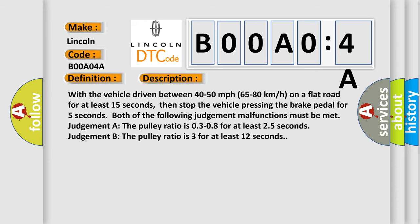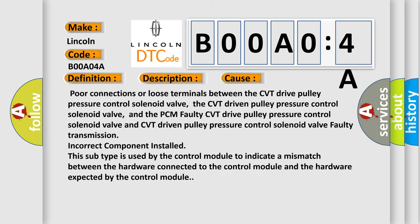This diagnostic error occurs most often in these cases: Poor connections or loose terminals between the CVT drive pulley pressure control solenoid valve, the CVT driven pulley pressure control solenoid valve, and the PCM faulty CVT drive pulley pressure control solenoid valve, and CVT driven pulley pressure control solenoid valve. The CVT faulty transmission incorrect component installed.